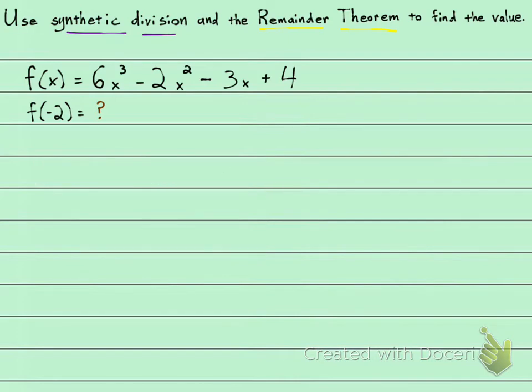So let's go ahead and set up our synthetic division. I'm going to use our coefficients here. So 6, negative 2, negative 3, and 4. There are none missing. And the number we're going to try in there is going to be right here. It's going to be negative 2.